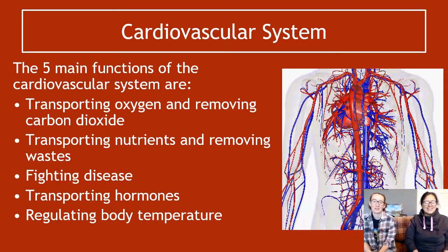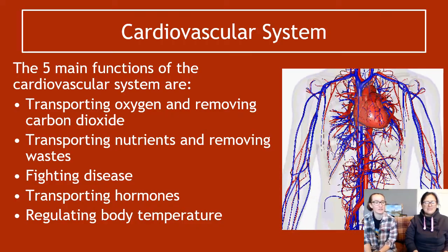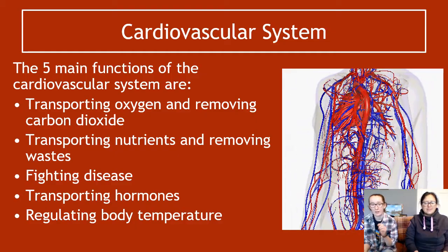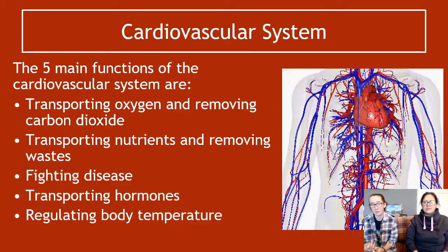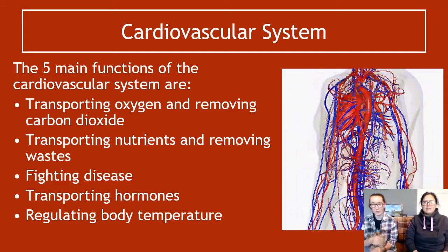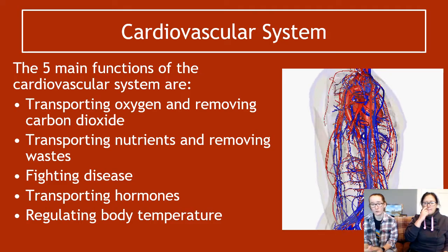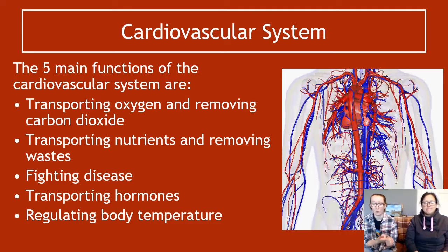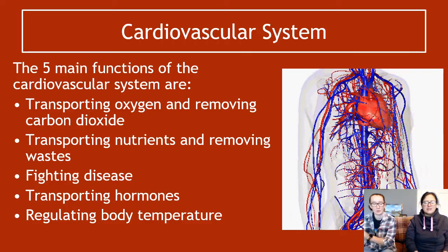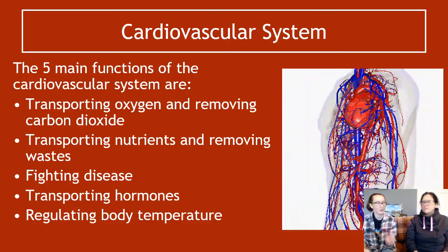In terms of the functions of the cardiovascular system, there are five main ones. Transporting oxygen and removing carbon dioxide — you should know that from National 5. Transporting nutrients and removing waste. Fighting diseases. Transporting hormones — remember hormones are chemical messengers that travel in the blood, so the blood is responsible for transporting them. And regulating body temperature, which we'll touch on a little bit in this video.